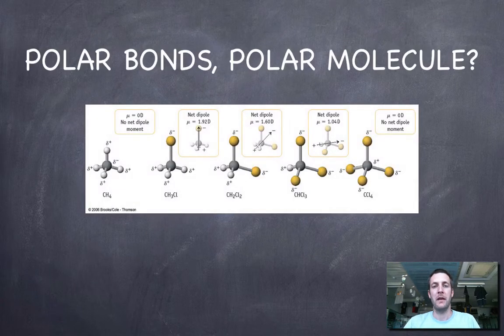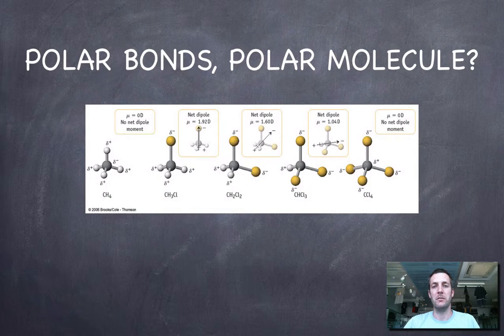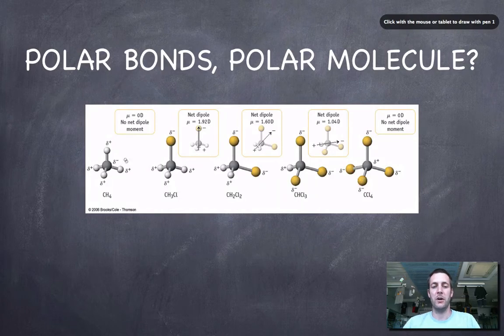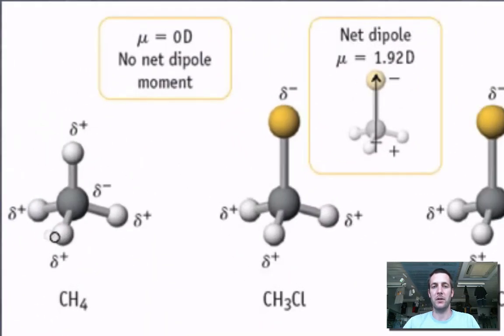And the thing is, just because you have polar bonds in the molecule, it doesn't necessarily mean that the molecule will be polar itself. So it can have polar bonds without being polar. Now we're going to start off by looking at methane here. What this says is that the dipole moment, or how polar this molecule is, is zero. It doesn't have a dipole moment, it's not polar.